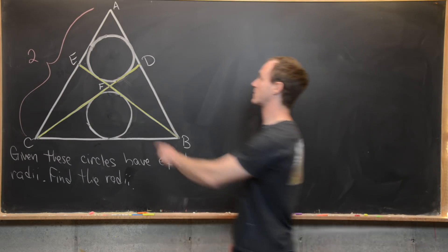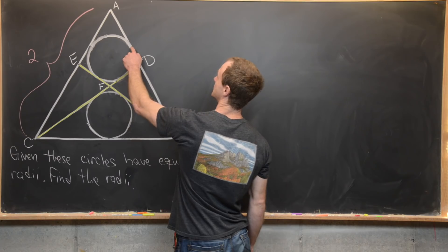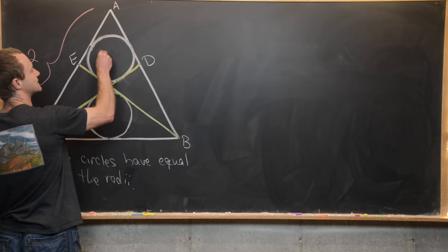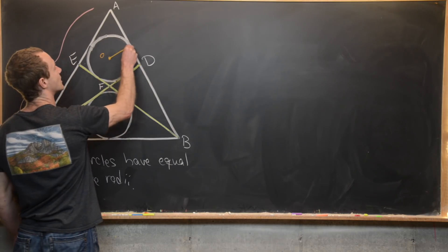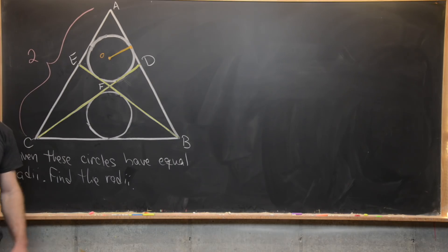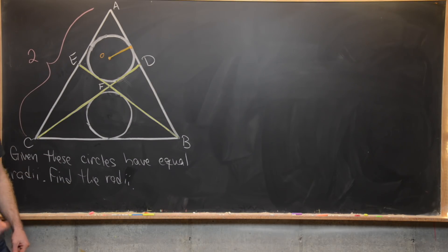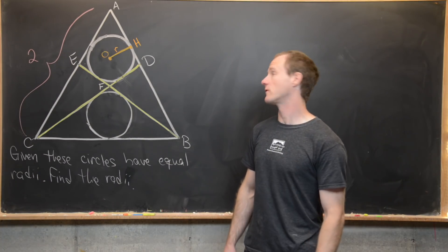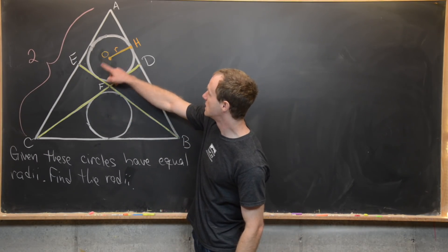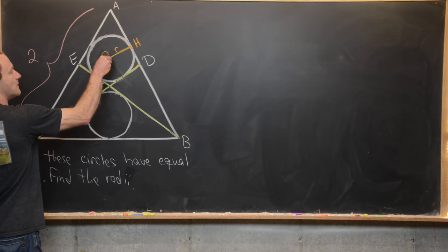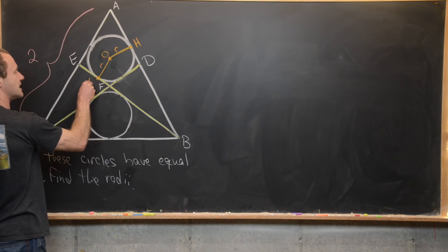The first line segment we want to introduce goes from the center of this circle to the edge of the circle, which is also the edge of the triangle. I'll put this constructed line segment in orange. From the center of this circle, which we'll call O, out to the circle and the triangle — we know this is normal to the triangle because it intersects the circle at a 90 degree angle, since the line segment is tangent to the circle. We'll call this point of intersection H and note that this length is r. We'll introduce another radius to this circle as well, going from O to this yellow line segment, again creating a 90 degree angle. We also know that this has length r, and we'll call this point K.